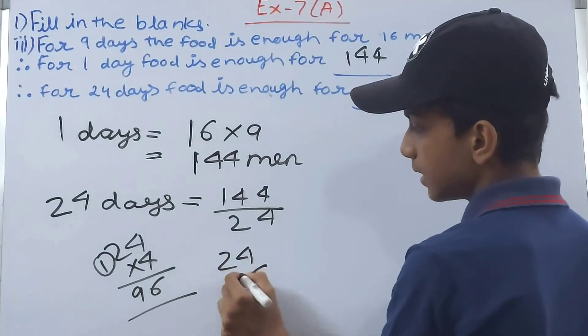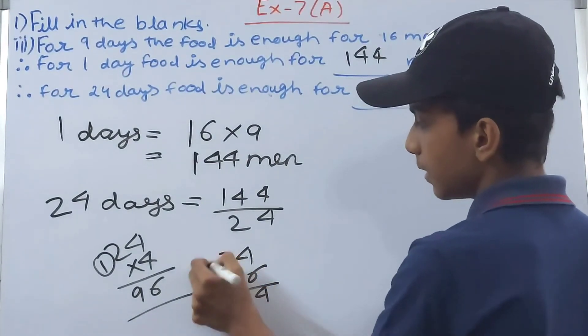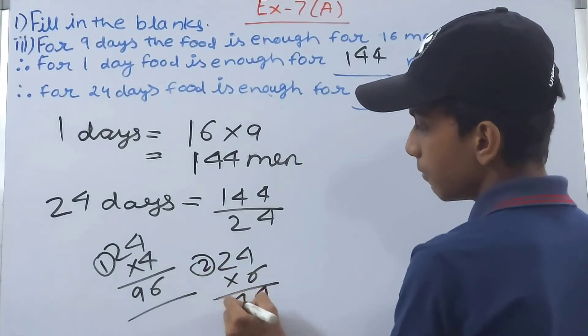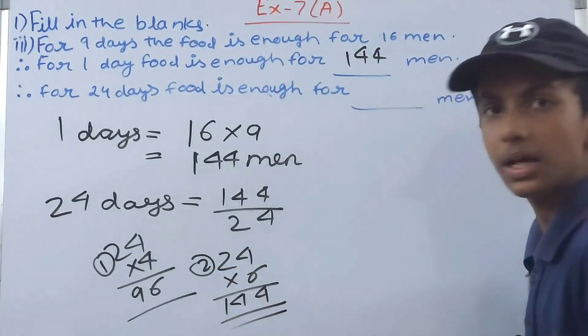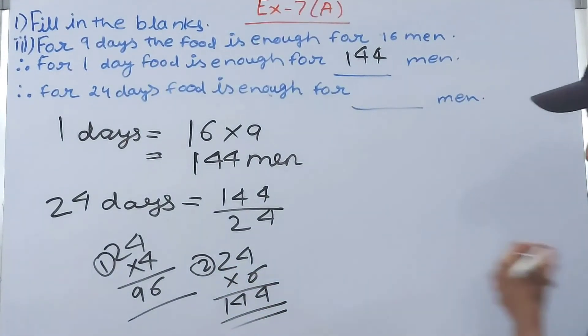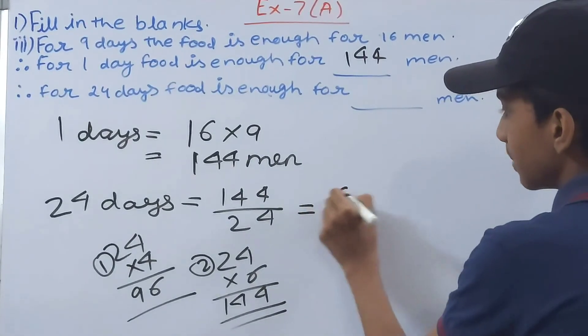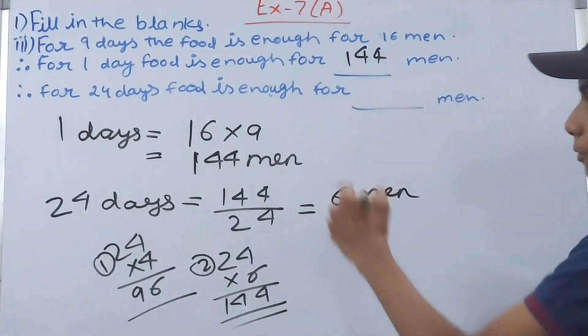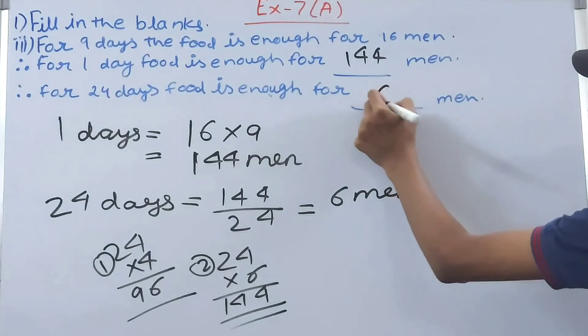144, how many times? 6 times. So this is equal to 6. This is equal to 6 men. So for 24 days the food will be enough for 6 men.